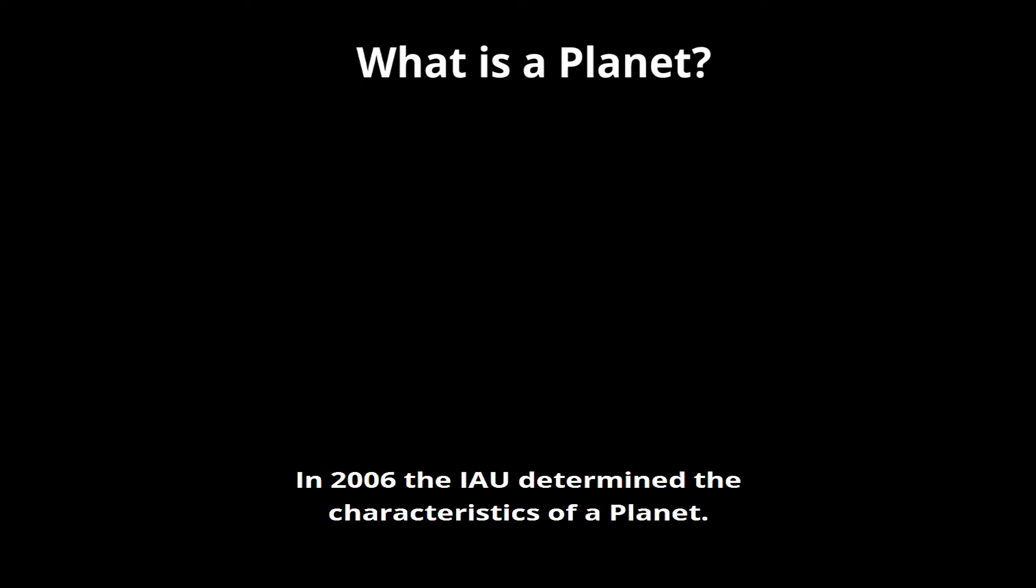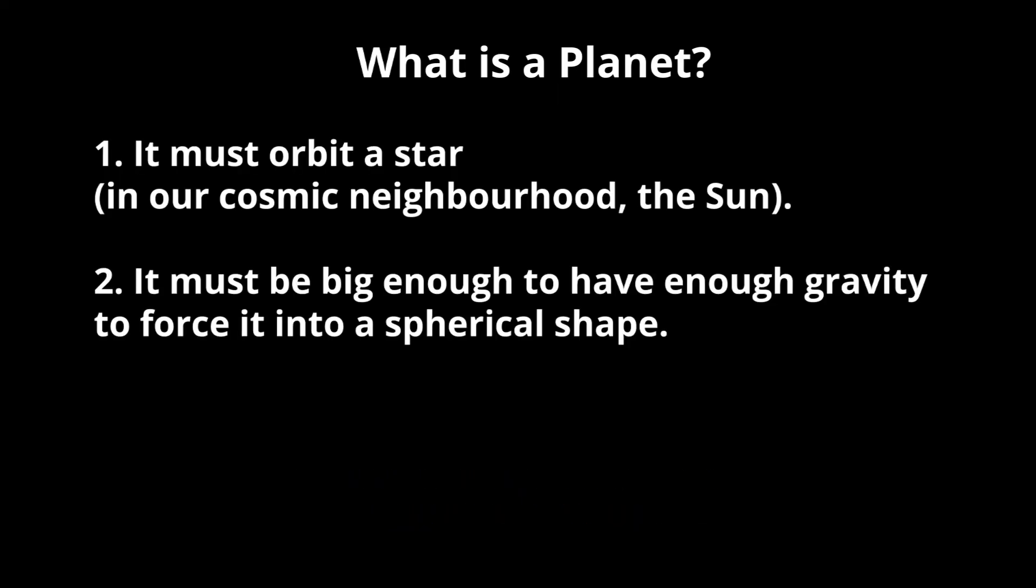In 2006, the IAU determined the characteristics of a planet. It must do three things: It must orbit a star, it must have a big enough force of gravity to force it into a spherical shape.